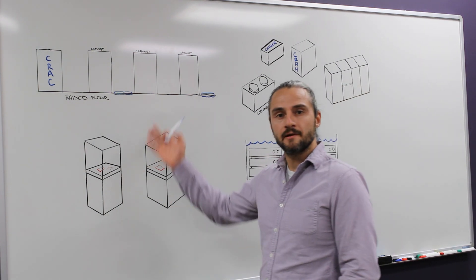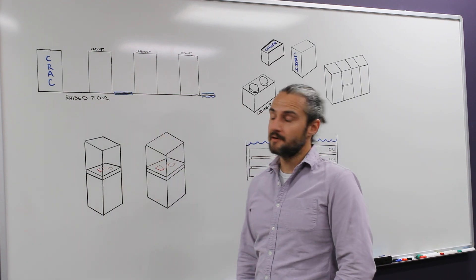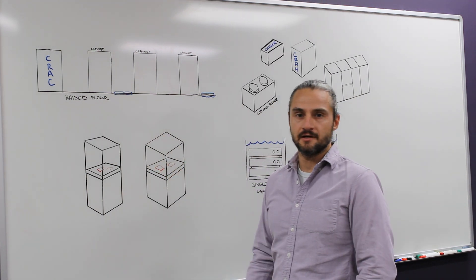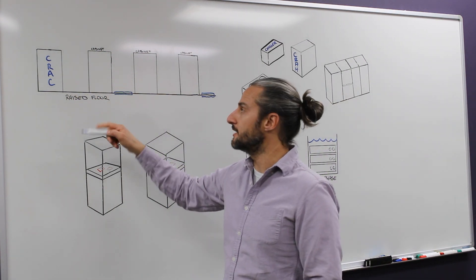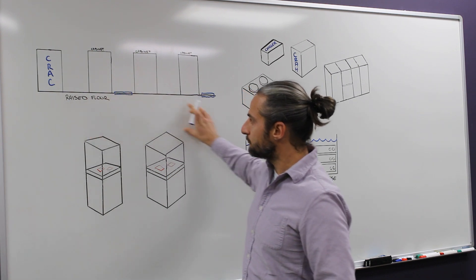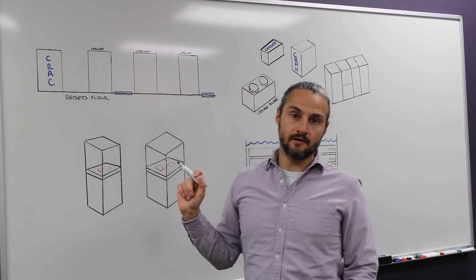We'll start at the top here with something most viewers might be familiar with. This is a traditional air cooling setup for a data center where you typically have a CRAC unit, computer room air conditioning unit, or a CRAH unit, a raised floor, and your server cabinets mounted on top.